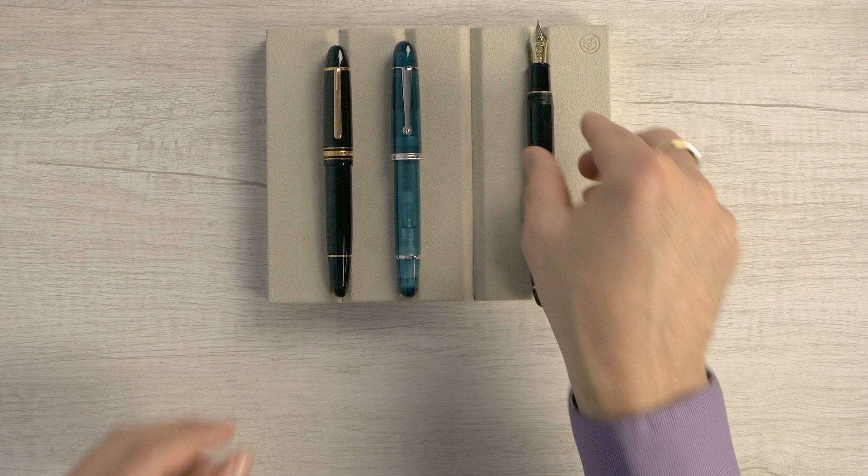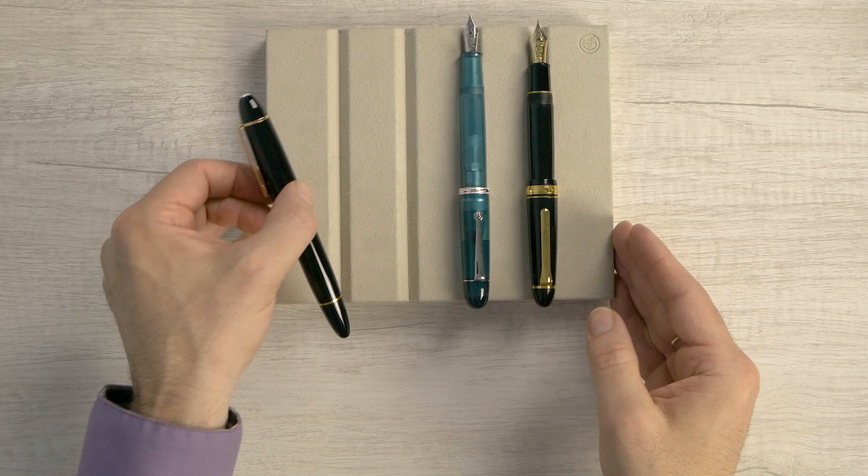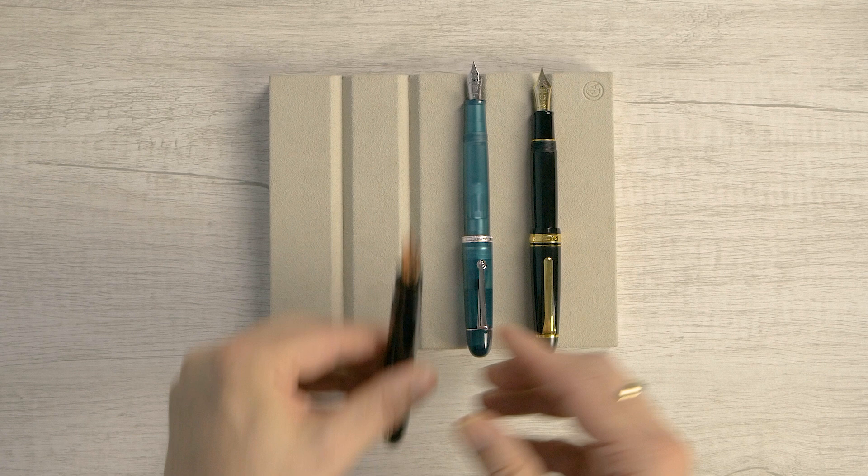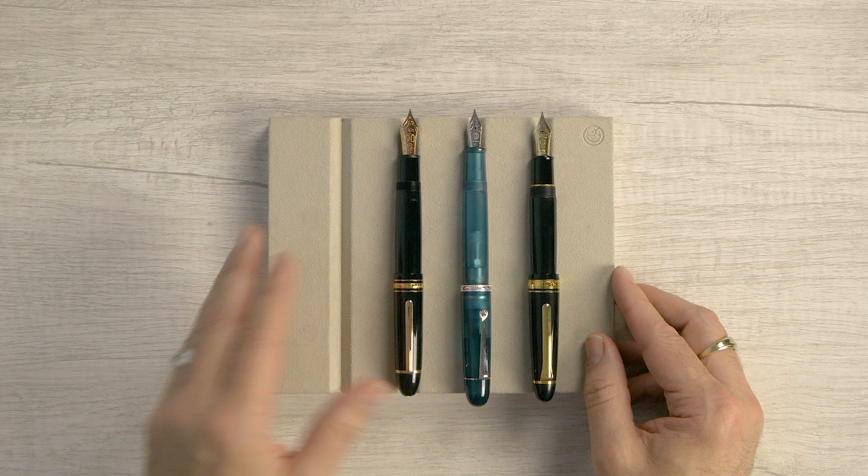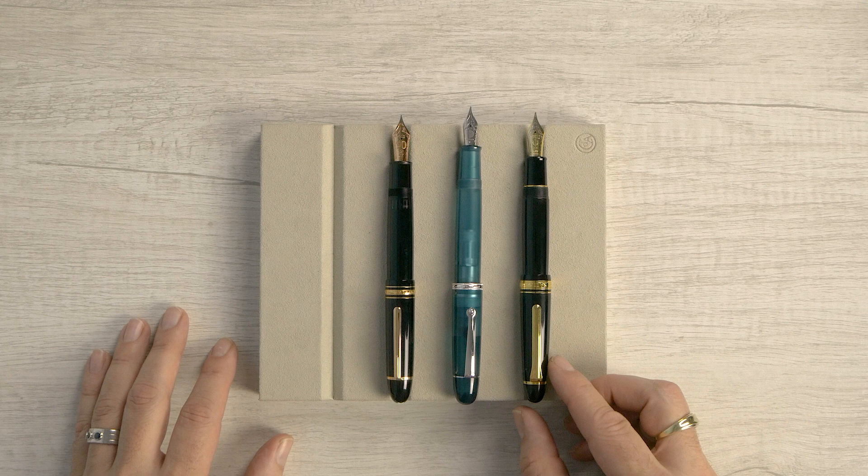Let's see how they look posted. There's the King. And it is a solid post too. When it posts on that ring, it's really, it's not going to come off. And here's the 149. So it's very comparable. Now the nib is certainly smaller than on the King of Pen and on the 149 here.